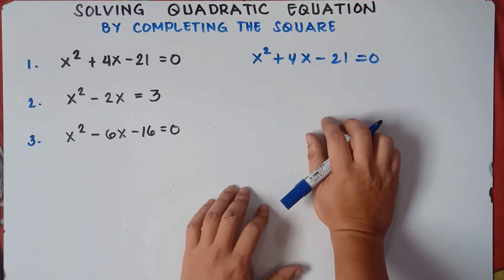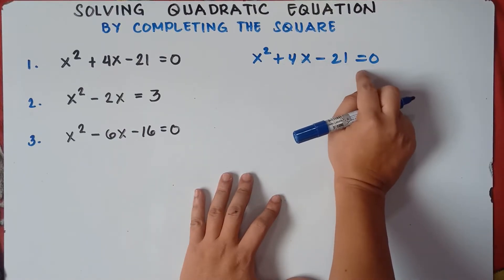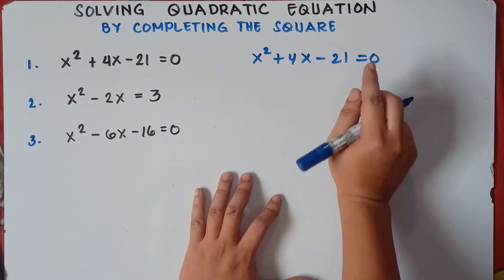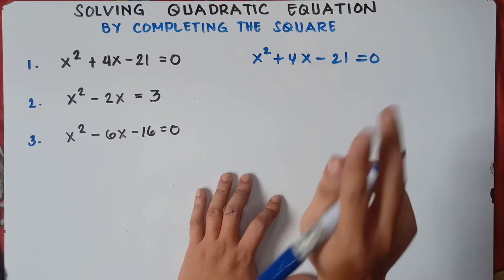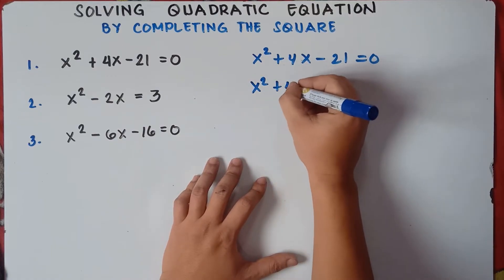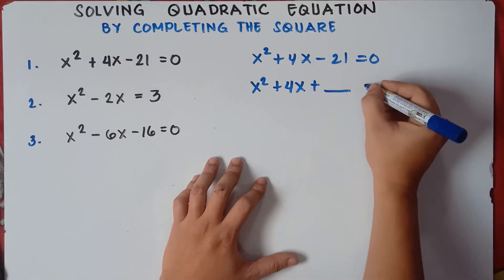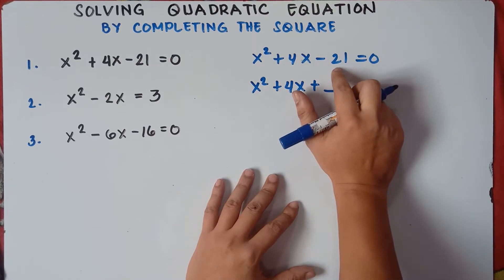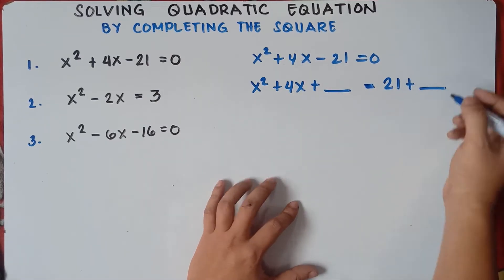The first thing that we need to do is transpose this constant from the left to the right of this equal sign. Once you transfer an equation across the equal sign, you always change the sign. So we need to transpose this one because we will be adding a new constant. So we transpose this 21 — since it's negative, it will become positive 21 — and then we will be adding another new constant.